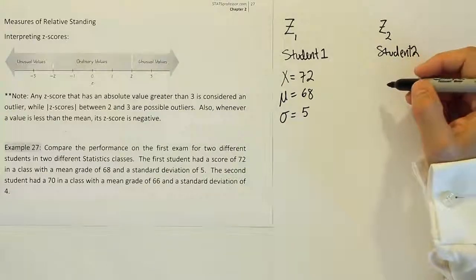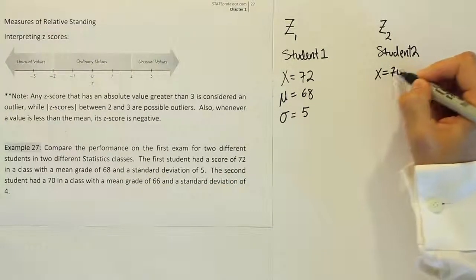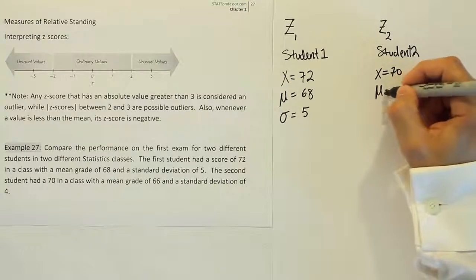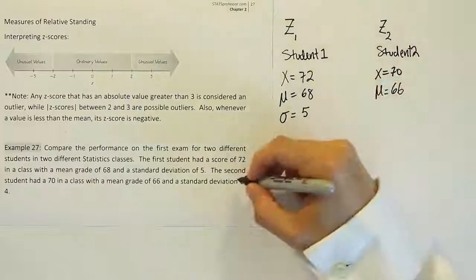For student 2, the second student had a 70 in a class that had a mean of 66 with a standard deviation of 4.